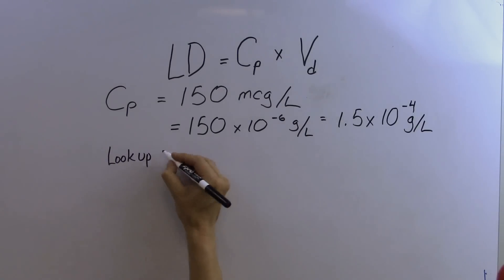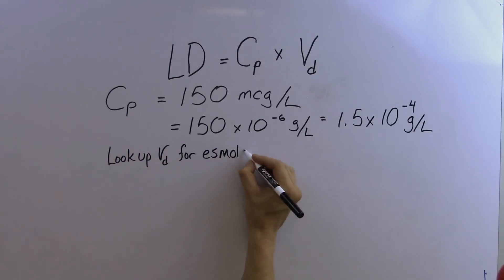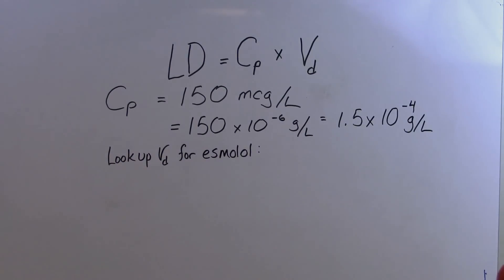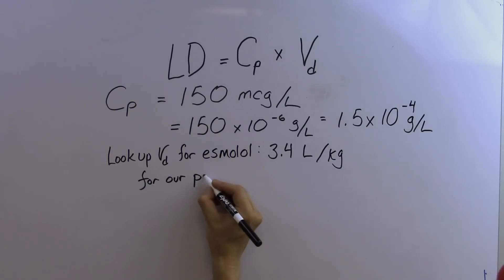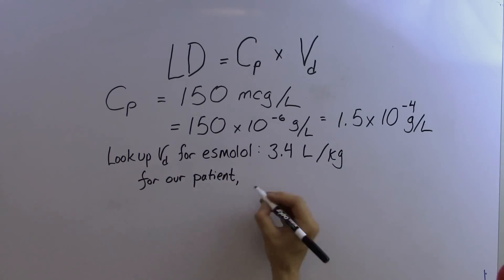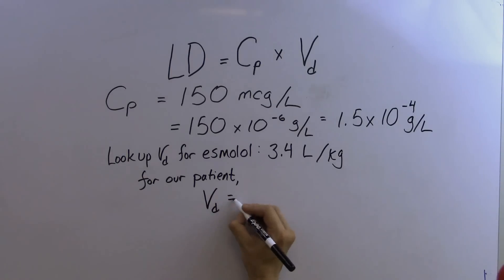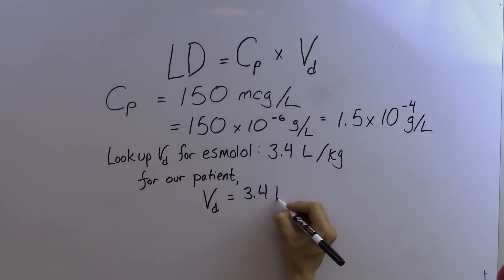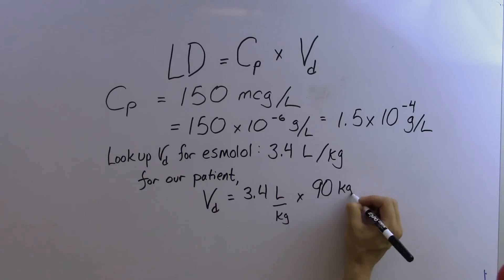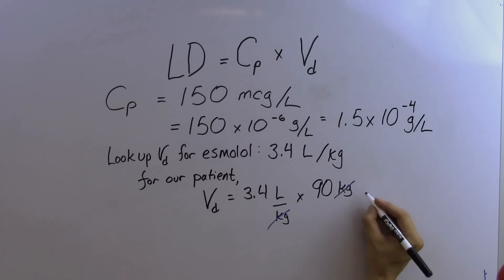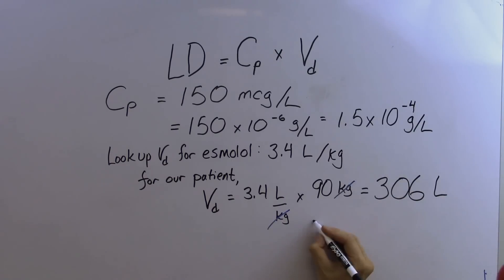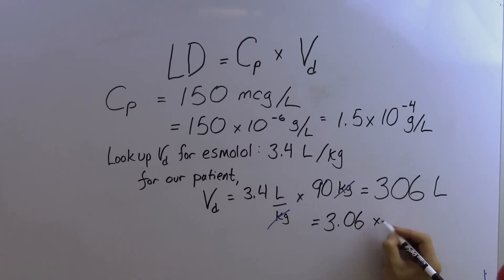Next, we can look up the volume of distribution for Esmolol — it's 3.4 liters per kilogram. So for our 90 kilogram patient, the volume of distribution is 3.4 L/kg × 90 kg, which equals 306 liters, or 3.06 × 10² liters.